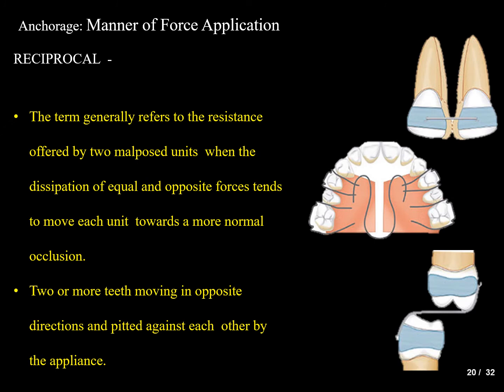Reciprocal anchorage refers to the resistance offered by two mirror post units when the dissipation of equal and opposite forces tends to move each unit towards a more normal occlusion. A clear example is closing a midline diastema using equal and opposite forces to move the teeth toward each other. Two or more teeth moving in opposite directions, fitted against each other by the appliance, constitute reciprocal anchorage.